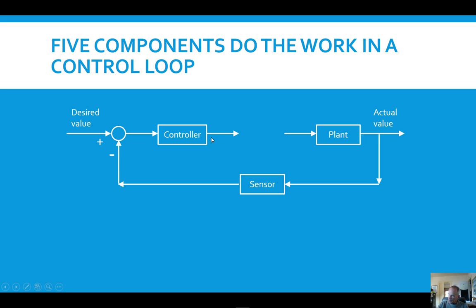And then the last item in the control loop is called the actuator. The actuator is actually the mechanism by which the controller talks to the plant or the controller influences the plant. It changes the way the plant is so that the actual value will move towards the desired value if they're not the same.